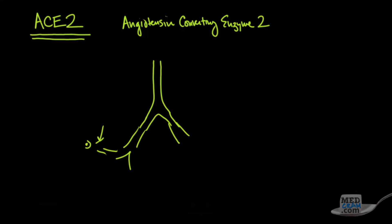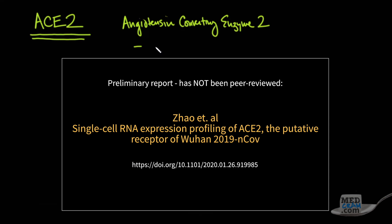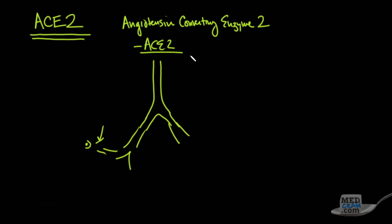But the issue is, is that there's been, again, another unpublished, not peer-reviewed article that looks at ACE2 expression with respect to gender and race, et cetera. And what it found, it was a very small study. It only had about eight subjects in it.